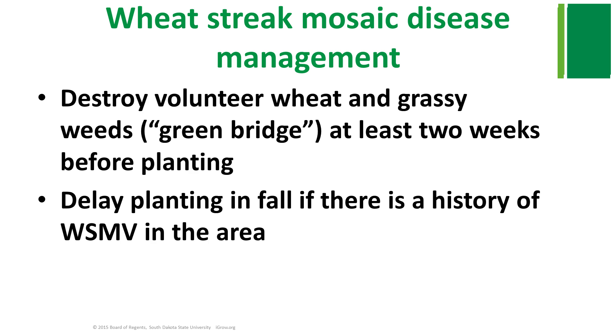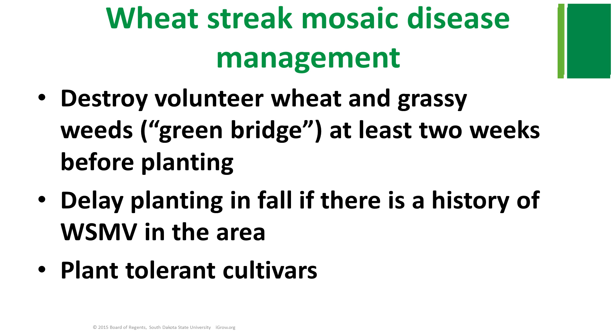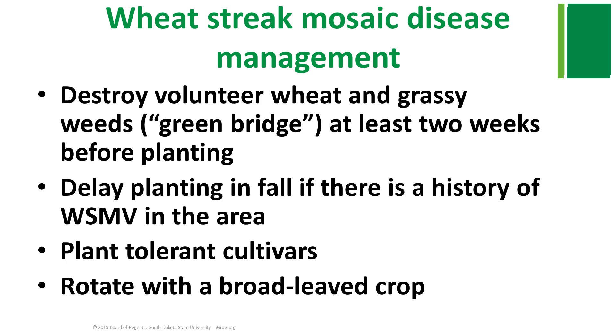Volunteer wheat and grassy weeds can be destroyed either through tillage or use of herbicide. Another method of controlling this disease is to delay planting. Planting early in fall, especially when temperatures are mild, increases the risk of wheat curl mites landing and transmitting viruses in emerging winter wheat. The other practice is to use resistant or tolerant cultivars. The virology program at South Dakota State University virus screening shows consistent differences between wheat cultivars for grain yield, reduced symptoms, and the extent of virus replication in these cultivars.